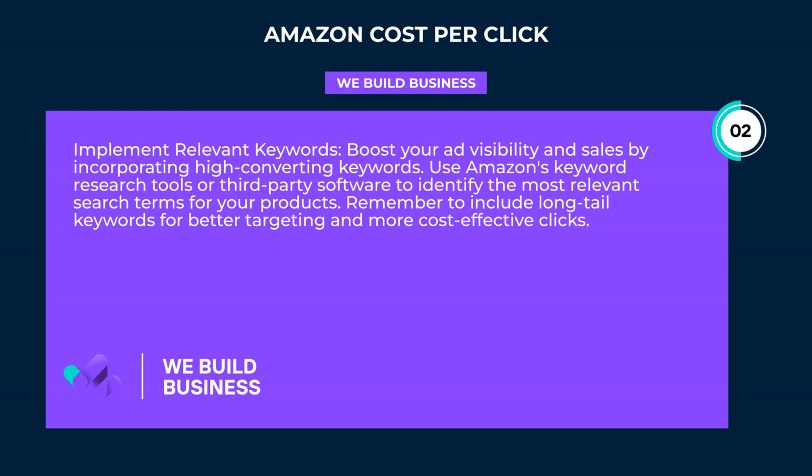Implement relevant keywords. Boost your ad visibility and sales by incorporating high-converting keywords. Use Amazon's keyword research tools or third-party software to identify the most relevant search terms for your products. Remember to include long-tail keywords for better targeting and more cost-effective clicks.